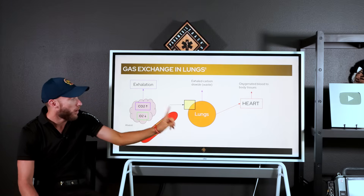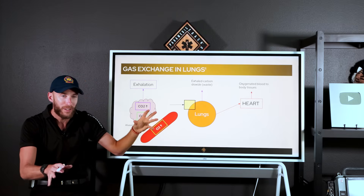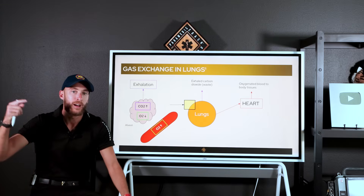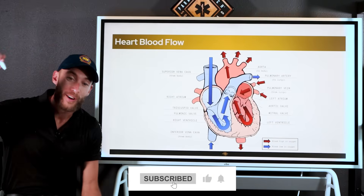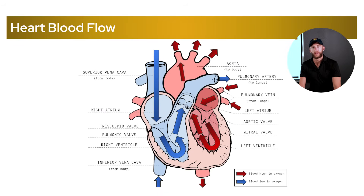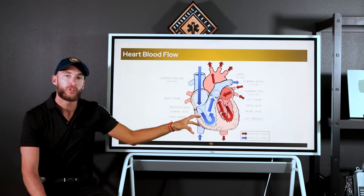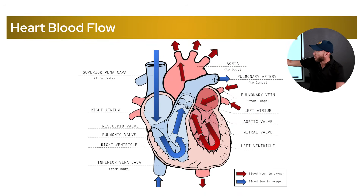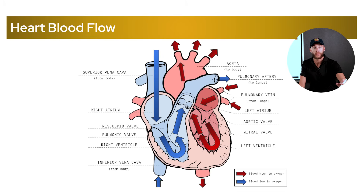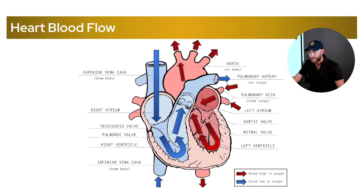Now let's move on to heart blood flow and how this all connects together. If a patient has a heart attack in a certain region of the heart, or if the patient has heart failure, and we know a certain valve or area of the heart is weaker, we may see certain findings or signs and symptoms in that patient. But we will not know any of this if we don't understand heart blood flow. These two lessons together are the most important lessons we can learn.